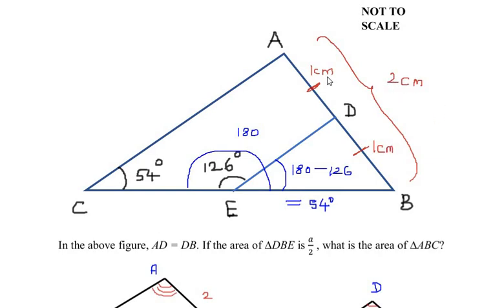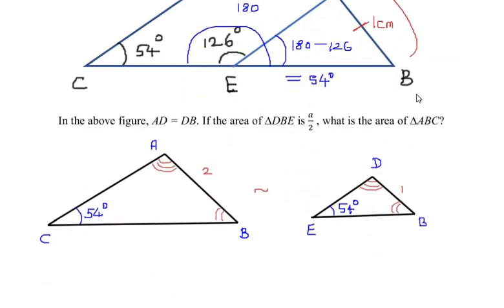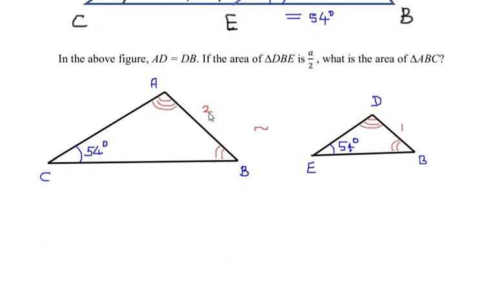If you take one it will split as 0.5 and 0.5, if you take three it will split as 1.5 and 1.5. Just for an example I have taken it as 2 centimeters, so AB is 2 centimeters and DB is 1 centimeter.